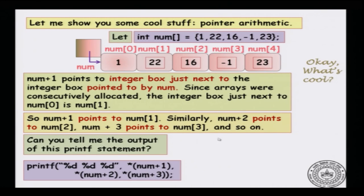Can you tell me the output of the following printf statement? Think about this: you have three integers to print using %d, %d, %d, and what is to be printed are *(num+1), *(num+2), and *(num+3).